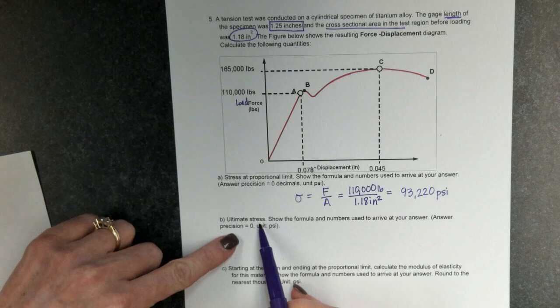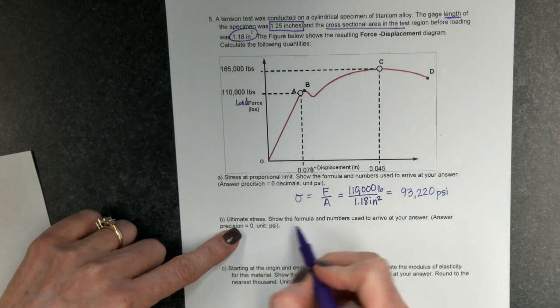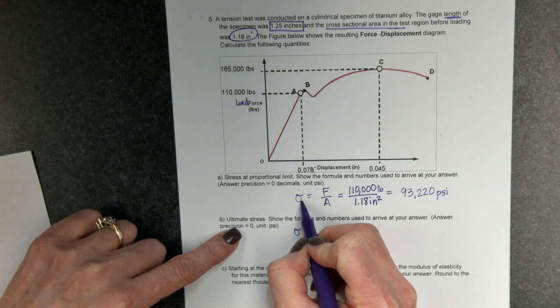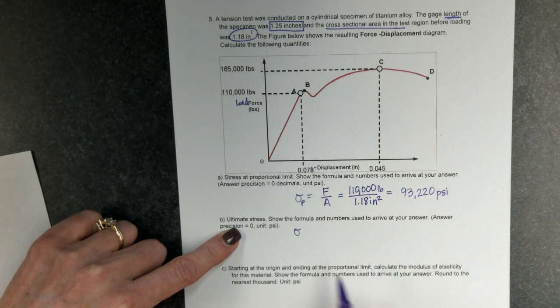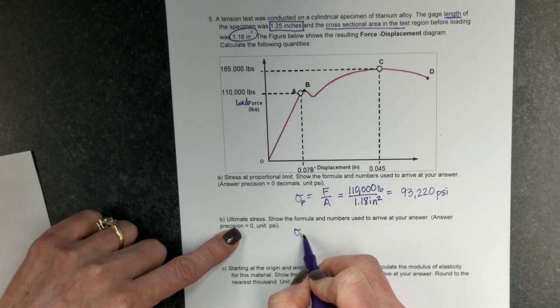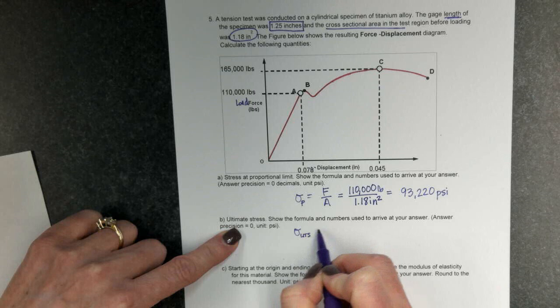Now it's asking me for the ultimate stress. So again, I find stress. This is stress at the proportional limit, so I'll put stress of P. This is going to be stress at UTS, ultimate tensile strength.